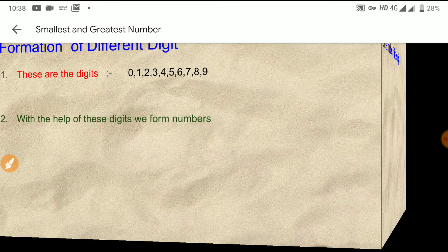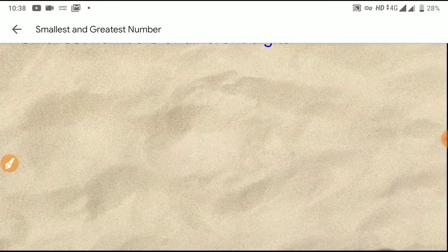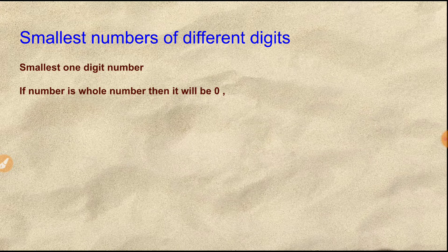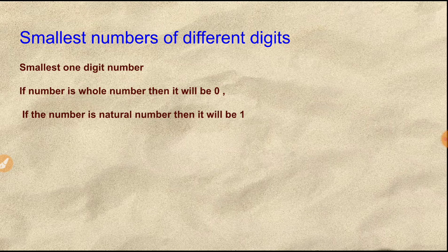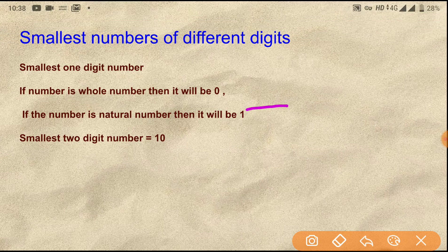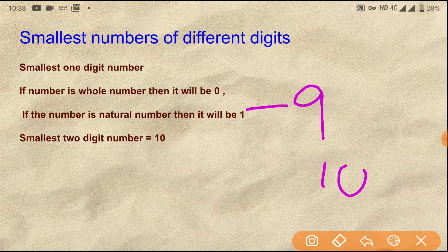Let's see the smallest digit number. If the number is a whole number then the smallest 1-digit number will be 0, and if the number is a natural number then it will be 1. The smallest 2-digit number will be 10.